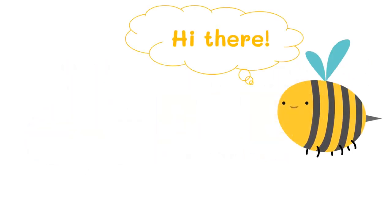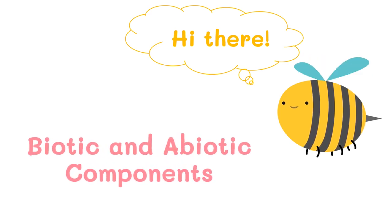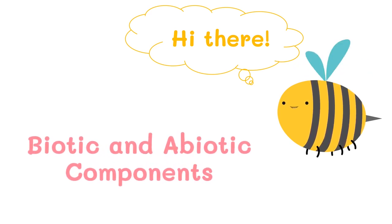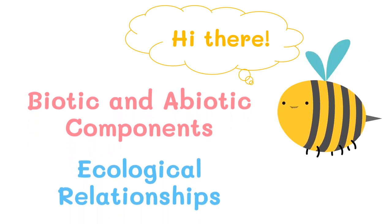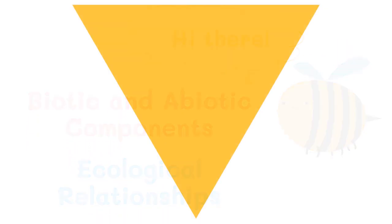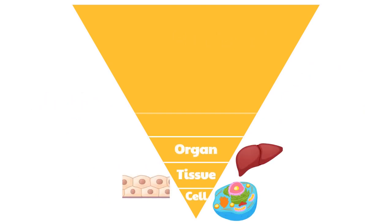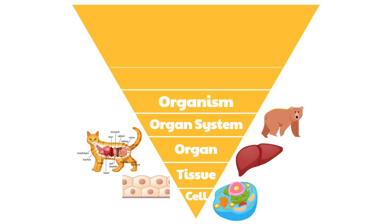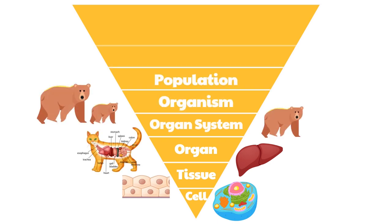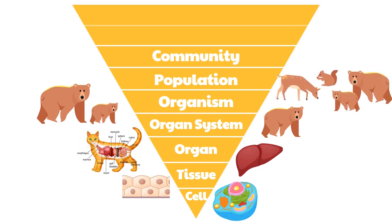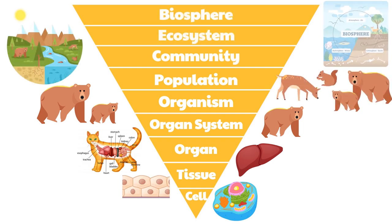In this video we will be discussing the biotic and abiotic components in an ecosystem as well as the different ecological relationships. In our previous lessons we learned about the different biological levels, which are arranged in a unique and complex hierarchical organization. If you haven't watched the lesson on the levels of biological organization, you can pause this video and watch that one first.